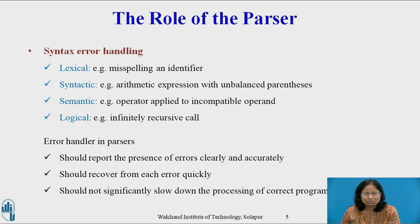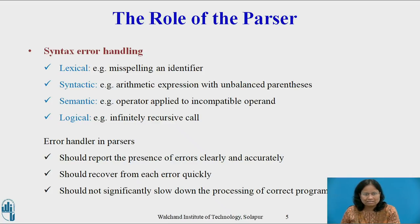If a compiler had to process only correct programs, its design and implementation would be greatly simplified, but programmers frequently write incorrect programs and a good compiler should assist the programmer in identifying and locating errors. Programs can contain errors at many different levels: lexical such as misspelling an identifier, keyword, or operator; syntactic such as an arithmetic expression with unbalanced parentheses; semantic such as an operator applied to incompatible operands; and logical such as an infinitely recursive call.